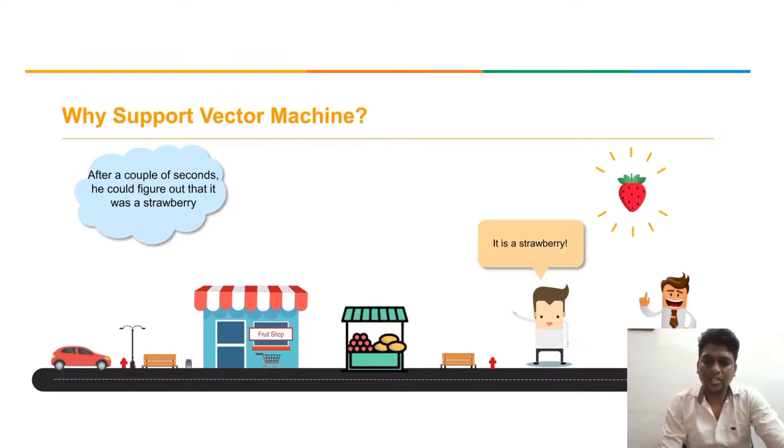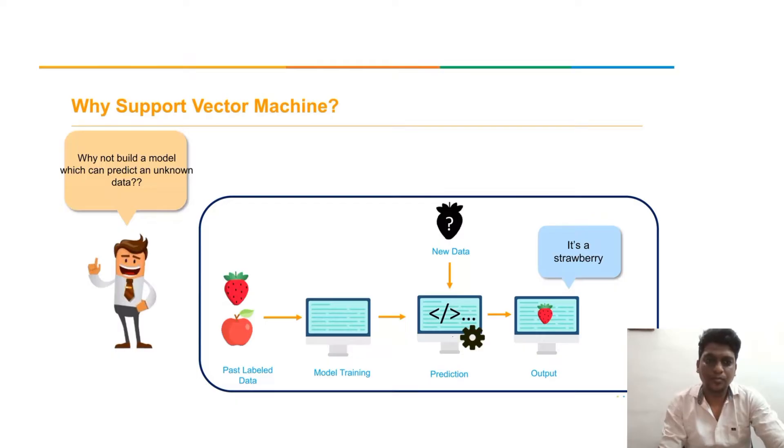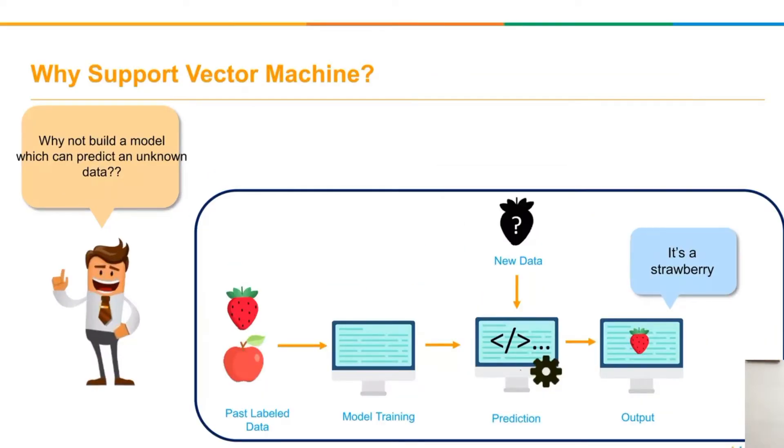After few moments, he correctly found that it is a strawberry. Because strawberry's color is similar to the color of the apple, he got confused. It builds a model that can predict unknown data.